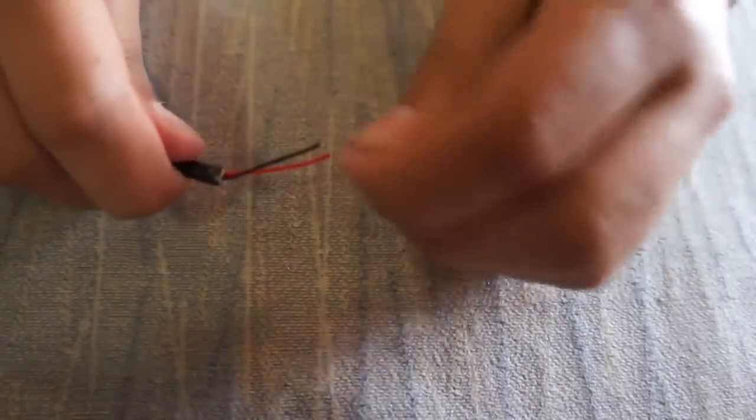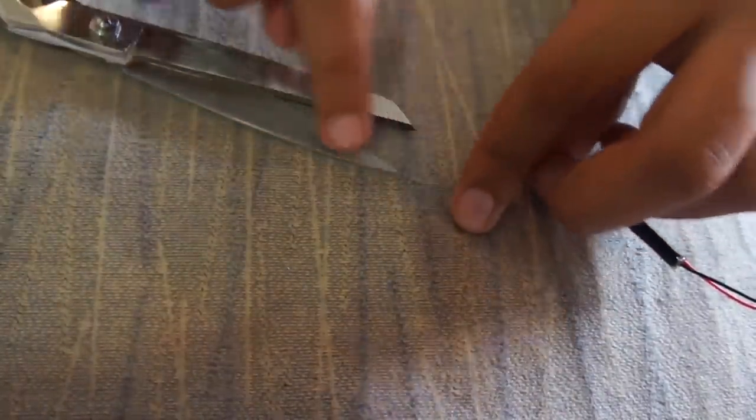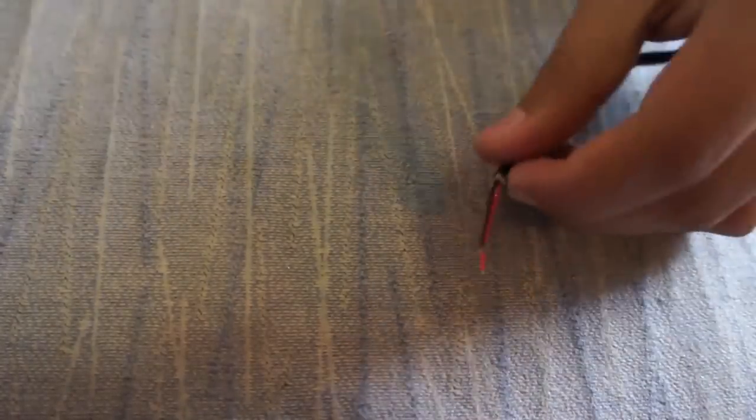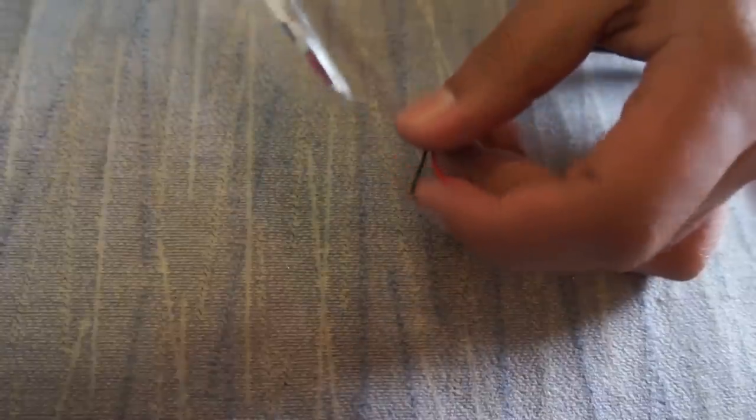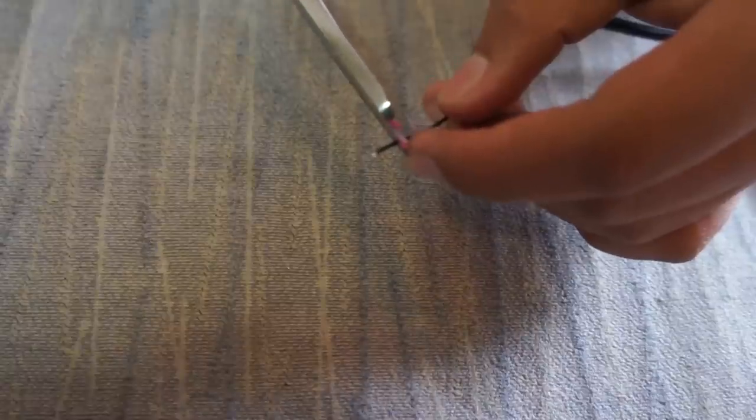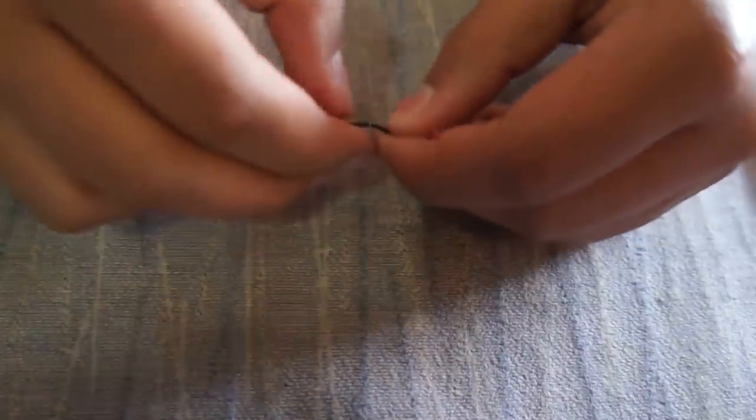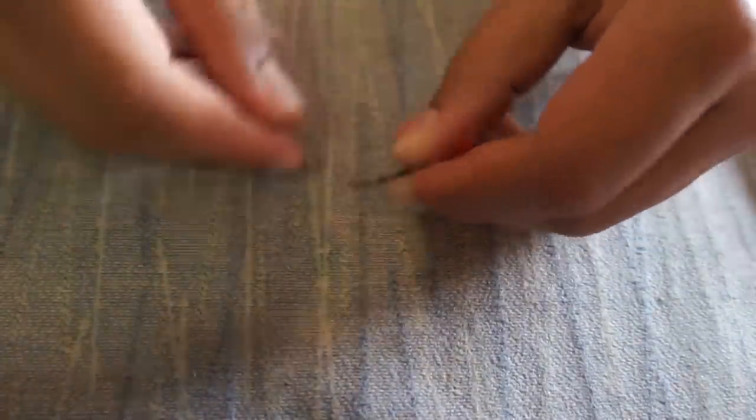Once you got that, you should be left with two wires. Now we're going to want to strip these two wires. What I like to do is take my scissors, take the dullest part which is the very top, and simply cut them. The dullest part is too dull to cut the wires, but it's sharp enough to cut the plastic or the wrap around it. Bend it a little bit and it should slide off, and go ahead and twist that.